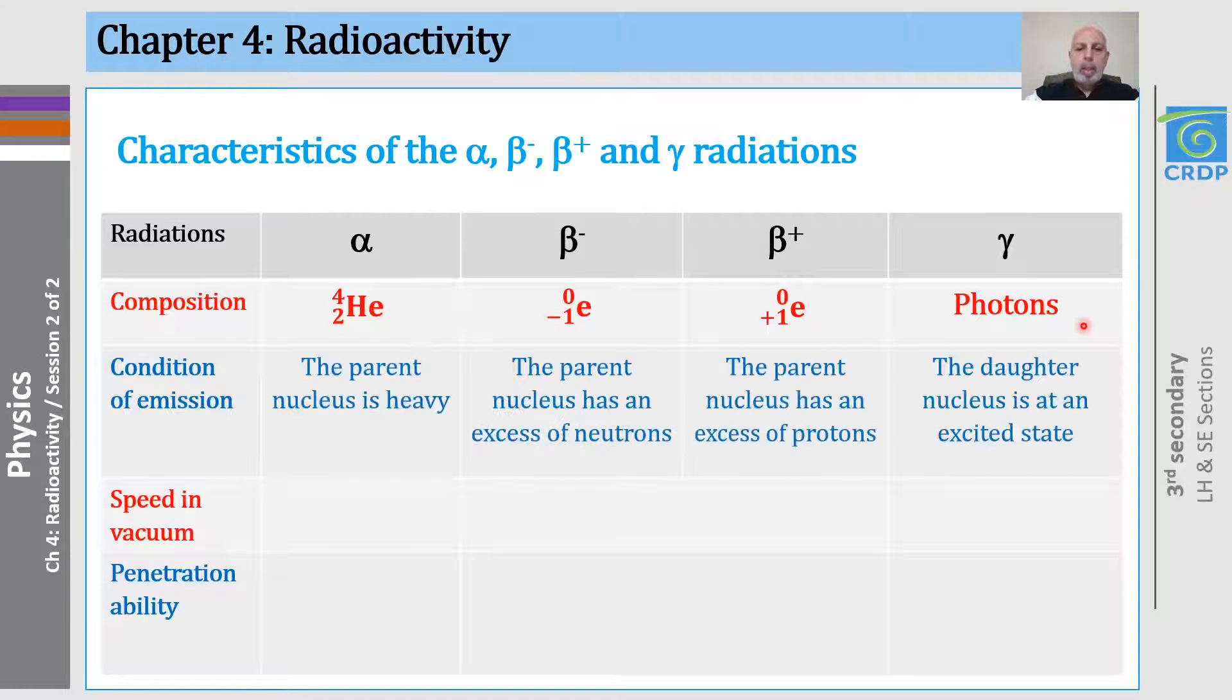And we learned that for the alpha radiation to occur, the parent nucleus must be heavy. For beta minus, the parent nucleus must have an excess of neutrons. As for the gamma radiation, the daughter nucleus must be at an excited state.